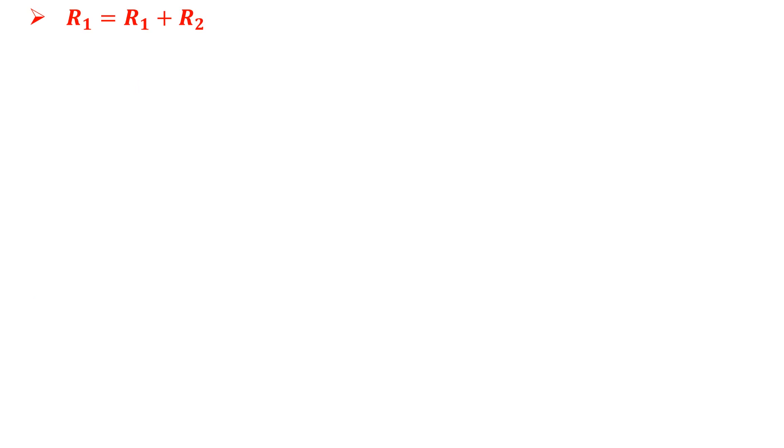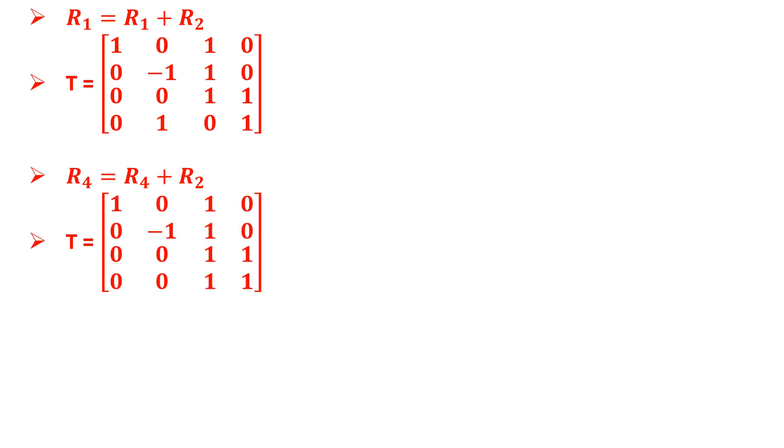Now adding the first row to the second row gives us T as follows and now adding the fourth row to second row gives us T as such.